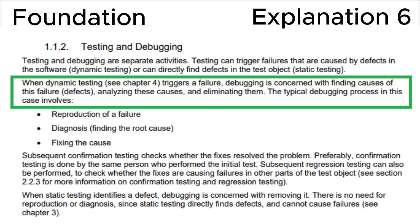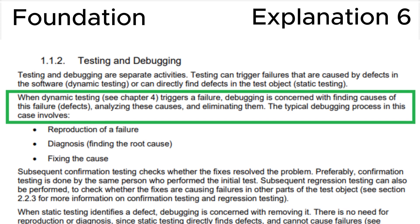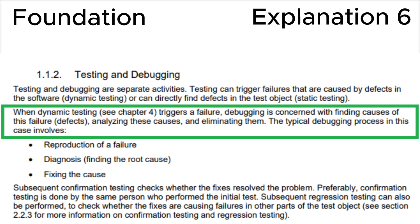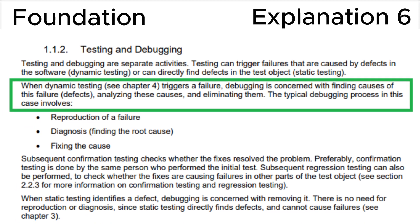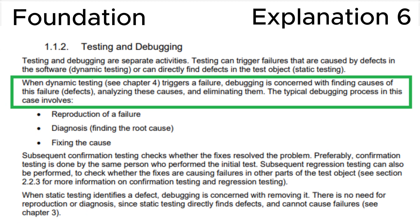The syllabus states: when dynamic testing triggers a failure, debugging is concerned with finding the causes of the failure or defects, analyzing these causes, and eliminating them. This is consistent with correct answer B. The main idea is that testing only triggers a failure — that is a task for a quality control or quality assurance engineer.